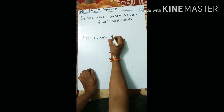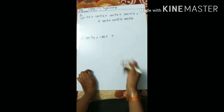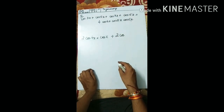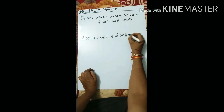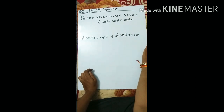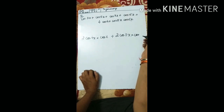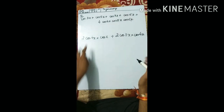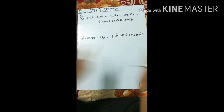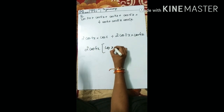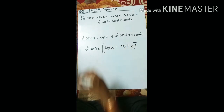For cos7x + cos15x: (7x + 15x) = 22x, and 22x/2 = 11x. Then (7x - 15x) = -8x, -8x/2 = -4x, and cos(-4x) = cos4x. Now take 2cos4x common from both results, leaving (cosx + cos11x) inside the bracket.